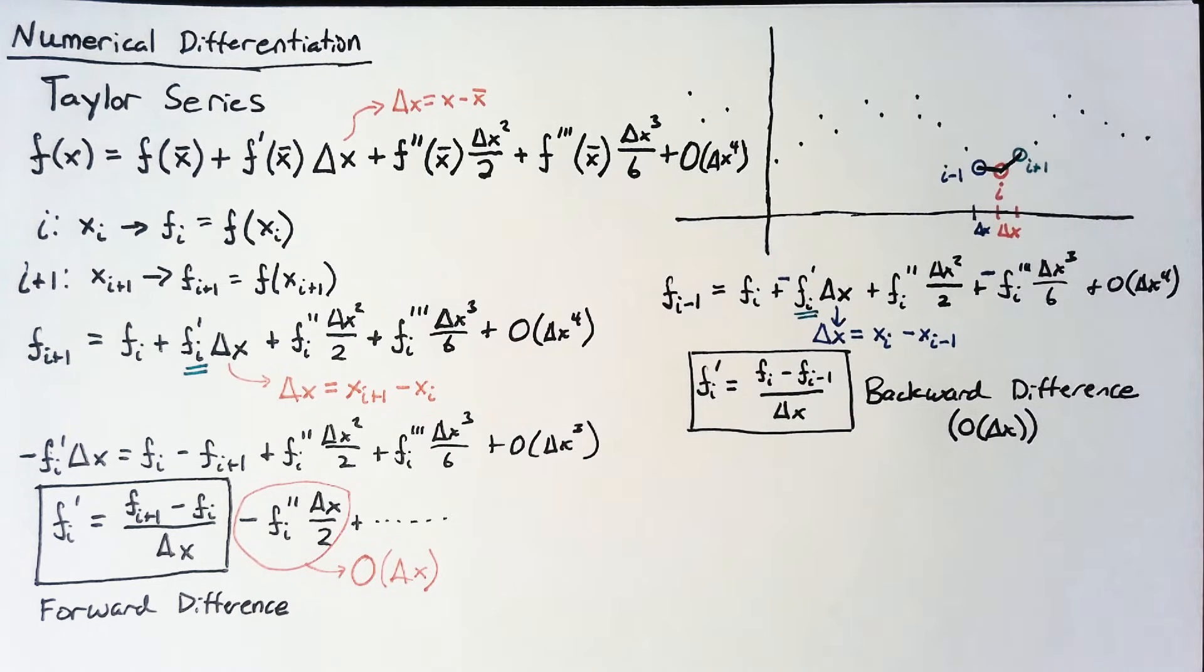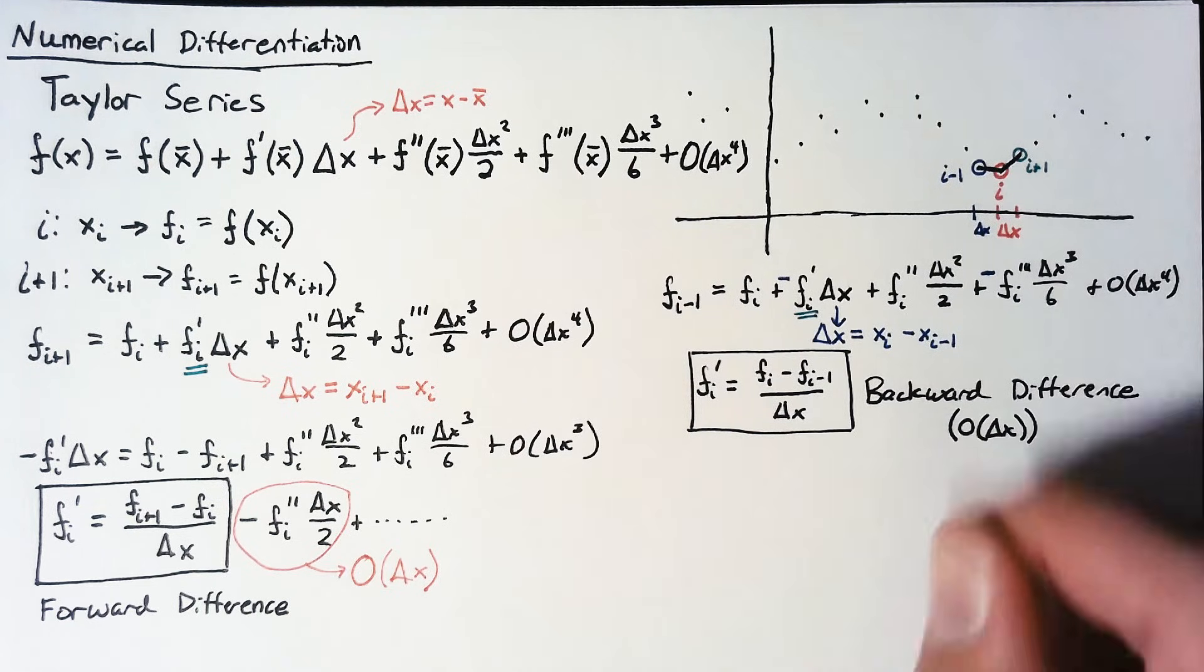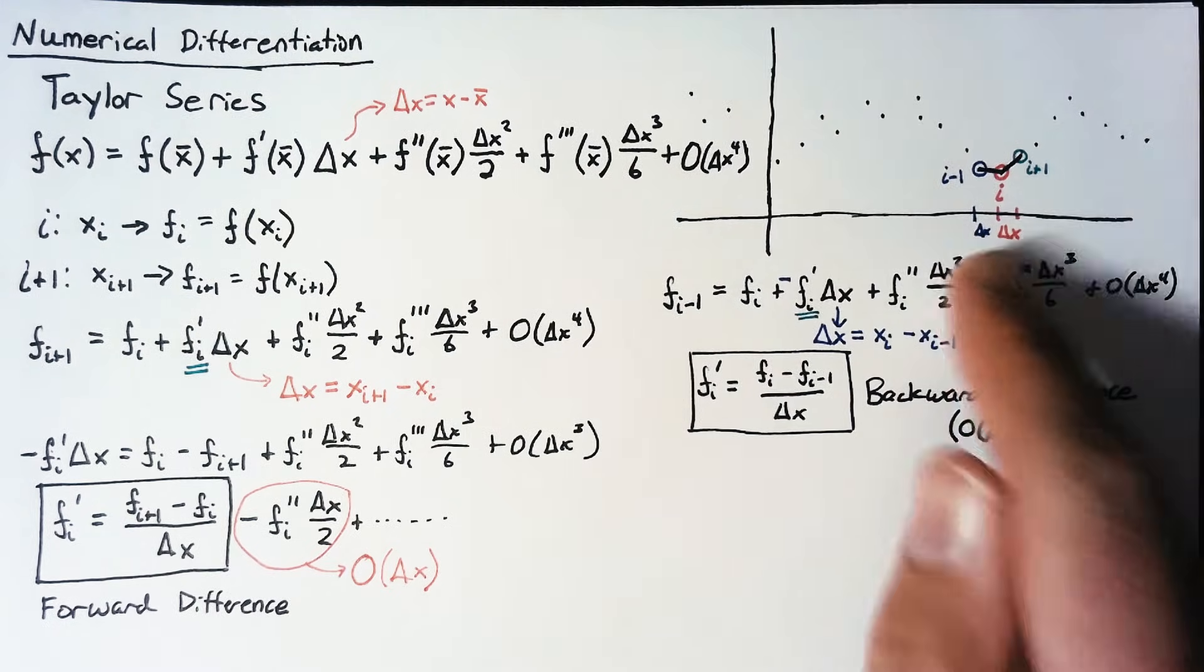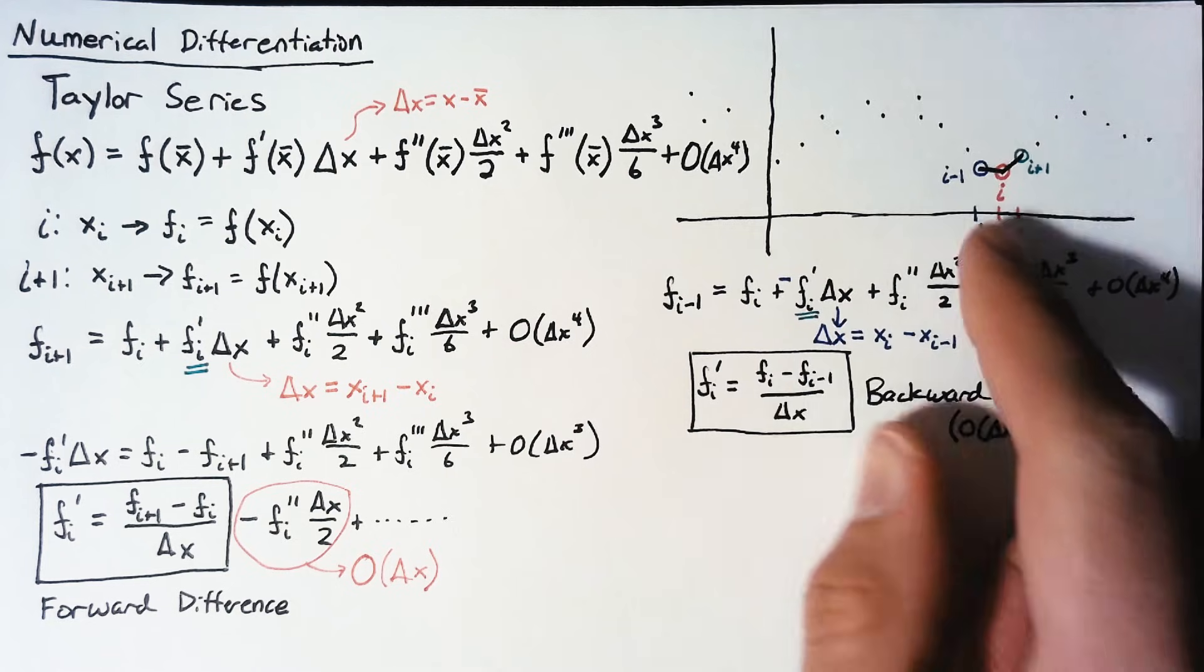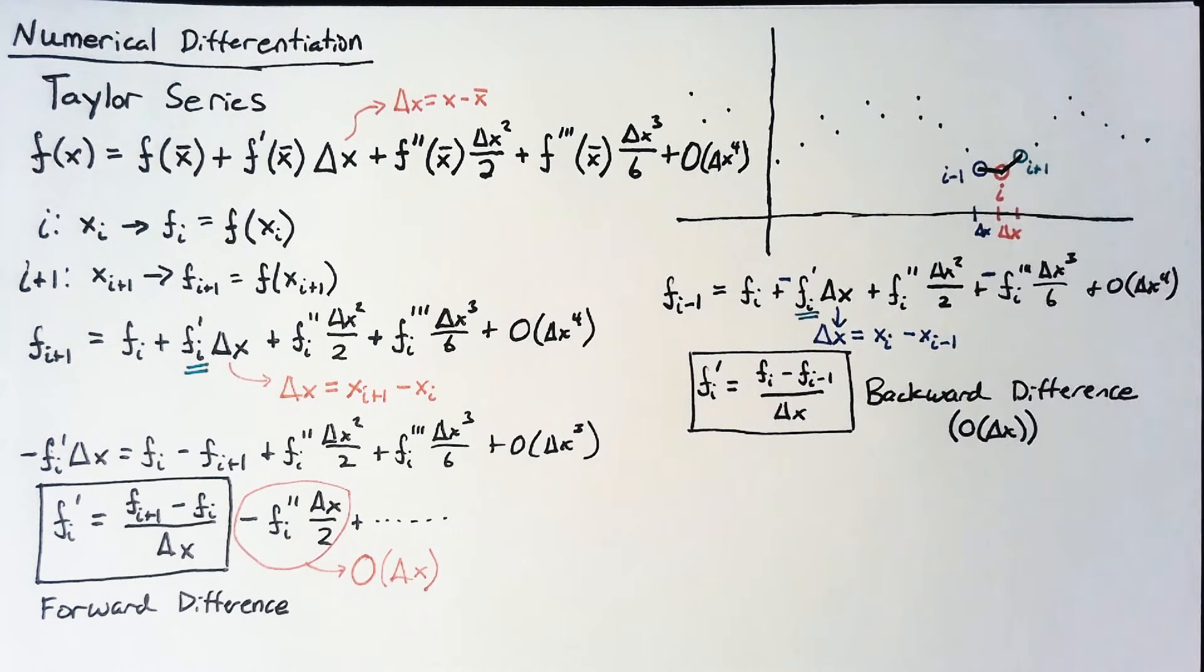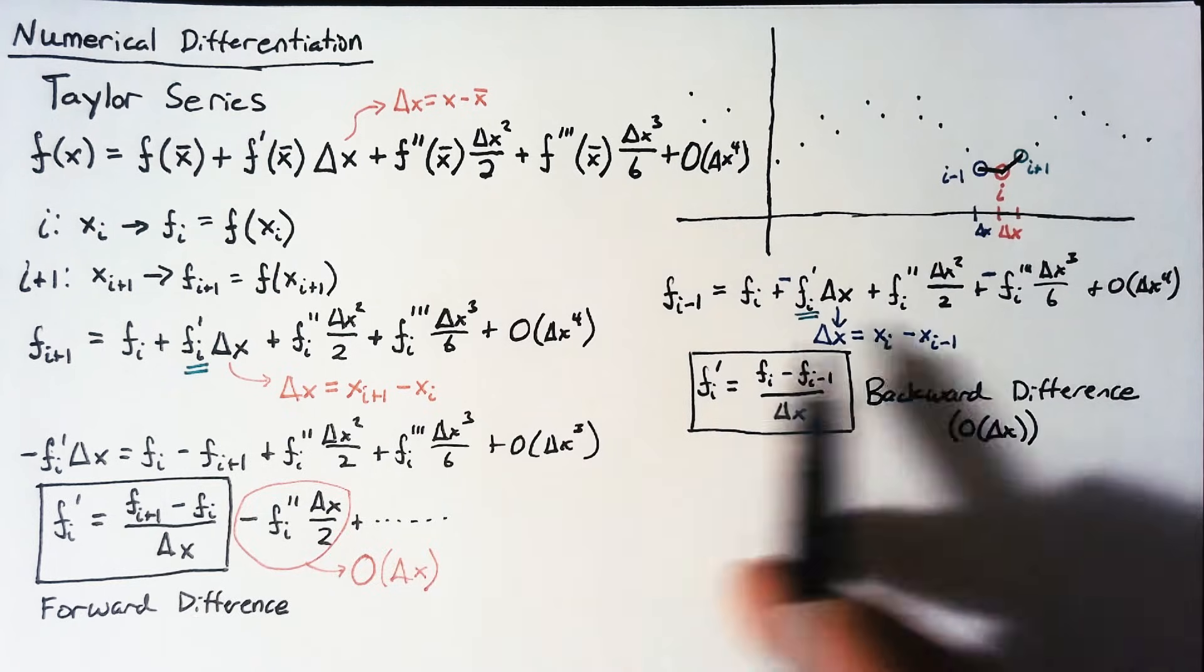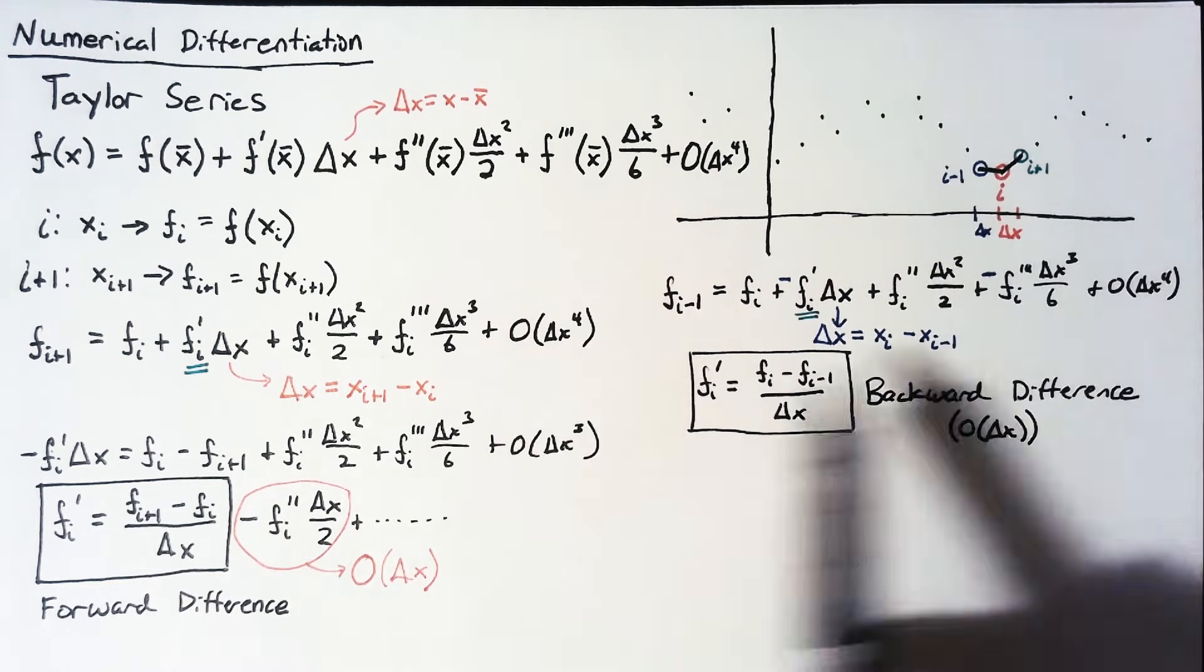So, how do we reduce this error? Well, option one is to reduce our delta x. If we're able to get data at closer intervals, then we should be able to reduce the amount of error in our derivative. But what if that's not an option? What if this is just all the data that we have and we can't do anything else?